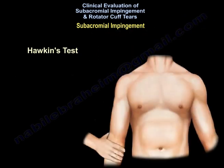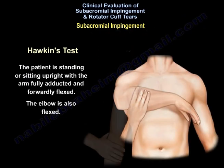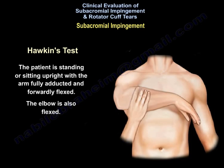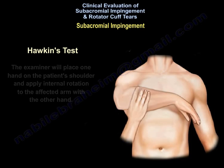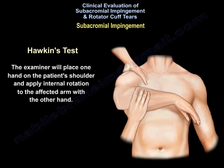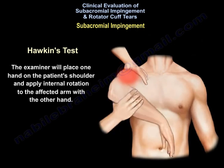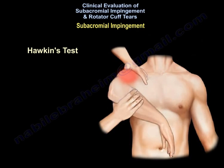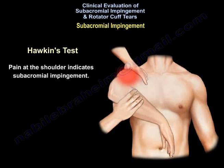Hawkins Test: The patient is standing or sitting upright with the arm fully adducted and forwardly flexed. The elbow is also flexed. The examiner will place one hand on the patient's shoulder and apply internal rotation to the affected arm with the other hand. Pain at the shoulder indicates subacromial impingement.